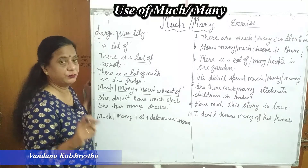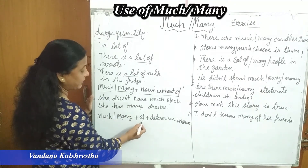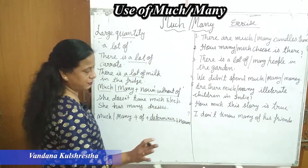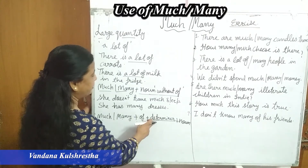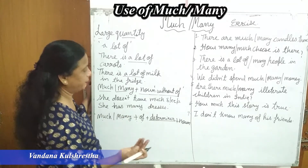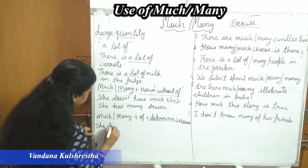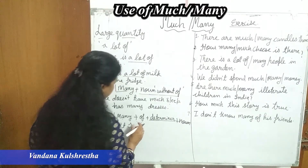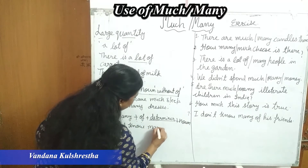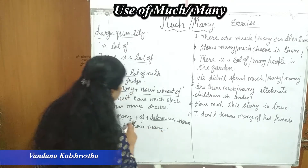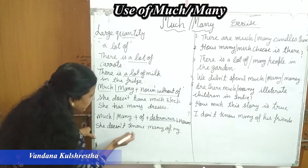Now, when do we use 'of' after much or many? When we are having any determiner before the noun — there we use 'of'. For example: 'She doesn't know many of his friends' or 'many of my relatives.' Jab determiner hota hai — his, my, the, this — toh much or many ke baad 'of' lagate hain. So the rule is: determiner diya hua hai ya nahi — usi se decide hoga whether to use 'of' or not.